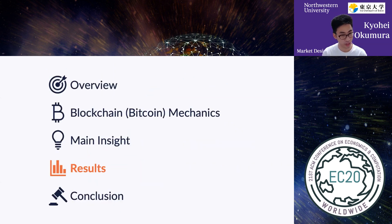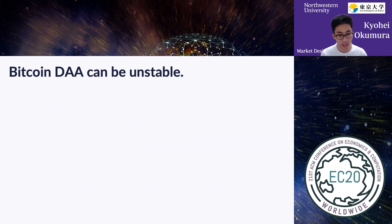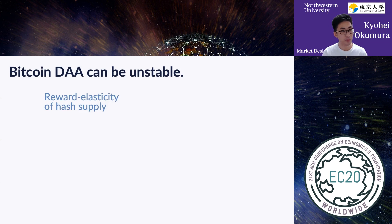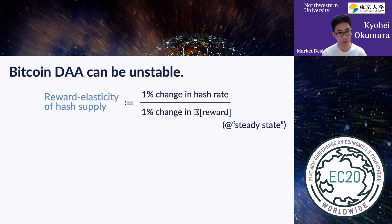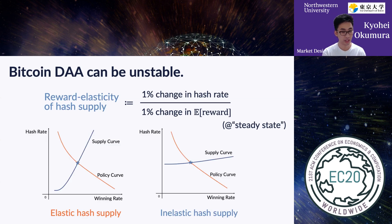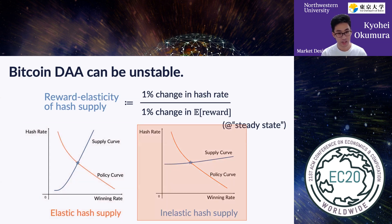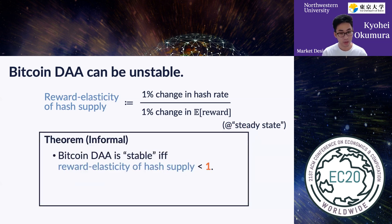We show that Bitcoin DAA can be unstable under certain conditions. To understand our results, let me introduce an important concept: reward elasticity of hash supply — the ratio of percent change in hash rate to percent change in the reward. In the left figure, hash supply is elastic, meaning supply is sensitive to changes in winning rate. In the right figure, hash supply is inelastic. Bitcoin DAA is stable only when the elasticity is less than one, and we will see that this condition can be violated in reality.